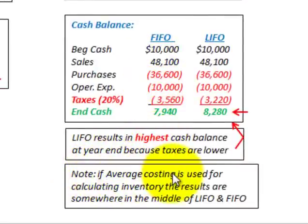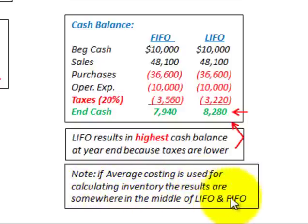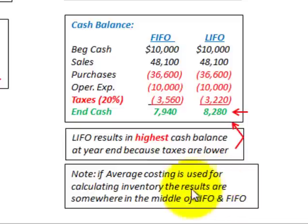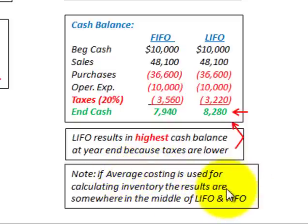One additional note: if average costing is used for calculating inventory, the results fall somewhere in the middle of LIFO and FIFO — which makes sense, since we'd be using an average cost rather than the last-in-first-out or first-in-first-out approach. Average costing produces values between the LIFO and FIFO amounts.